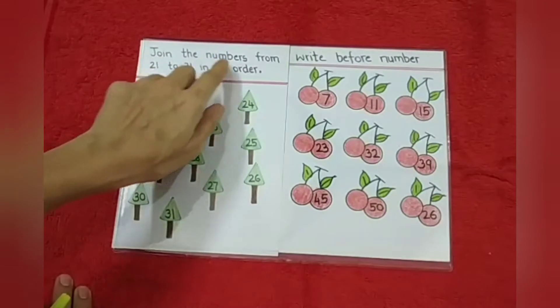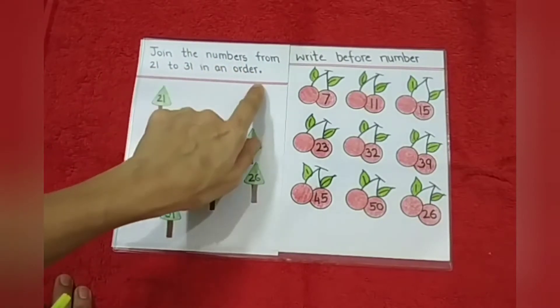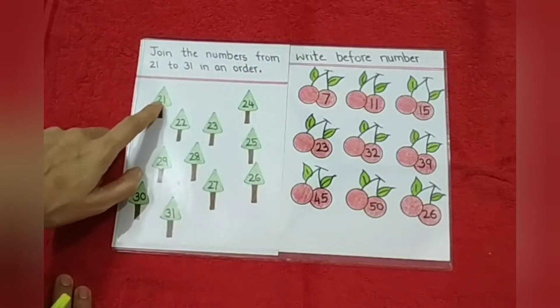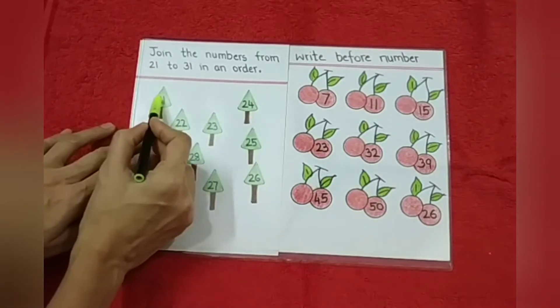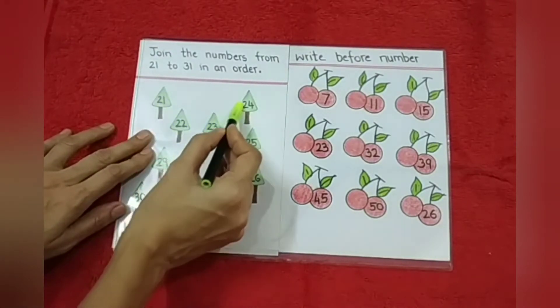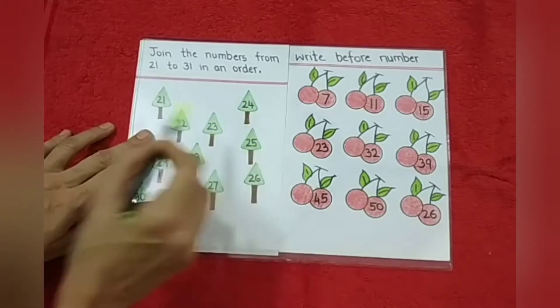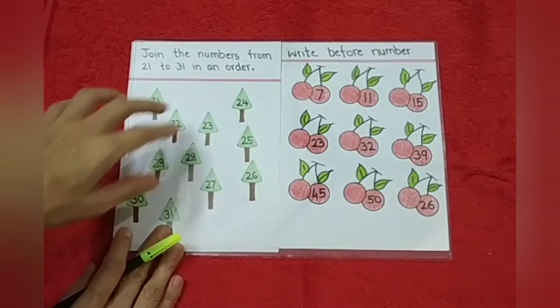Here, join the numbers from 21 to 31 in an order. So after 21, which number will come? 22. So they just have to join. Then 23, 24, 25 and so on.